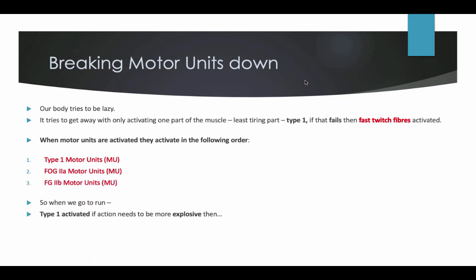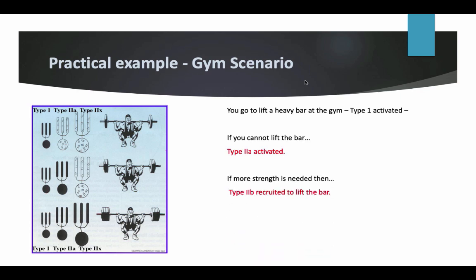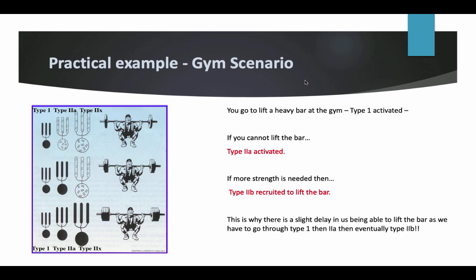When we go for a run, type 1 is activated. If the action needs to be more explosive, type 2A is recruited. And if even more power is needed, type 2B is activated. A practical example — the gym scenario: you go to lift a heavy bar at the gym, type 1 is activated. If you cannot lift the bar, type 2A is activated. If more strength is needed, then type 2B is recruited to lift the bar. This is why there is a slight delay in being able to lift the bar, as we have to progress through type 1, then type 2A, and then eventually type 2B.